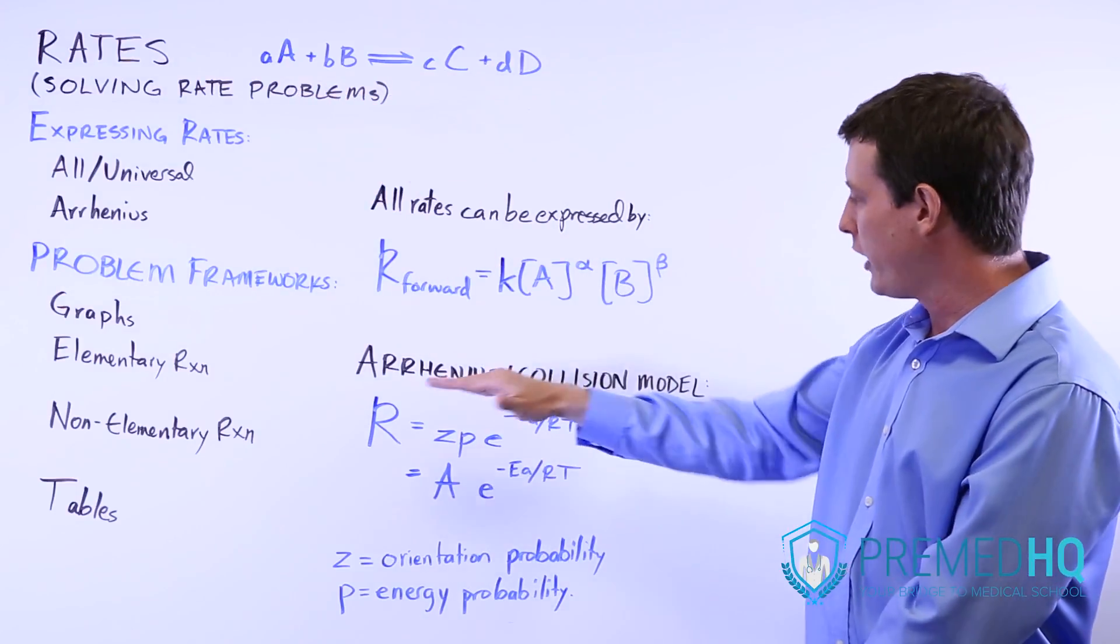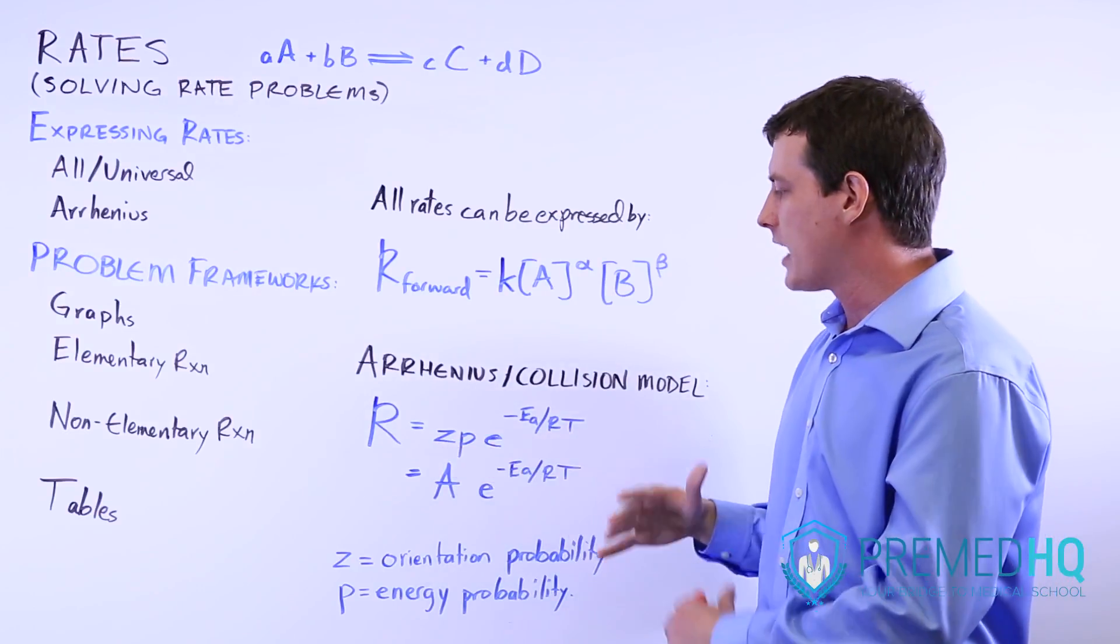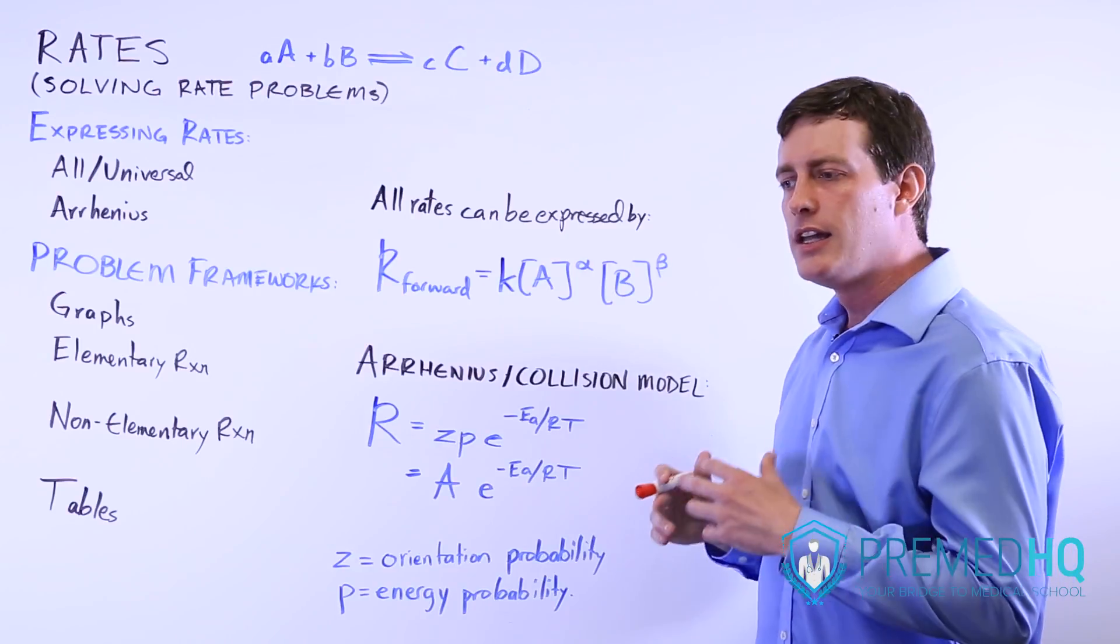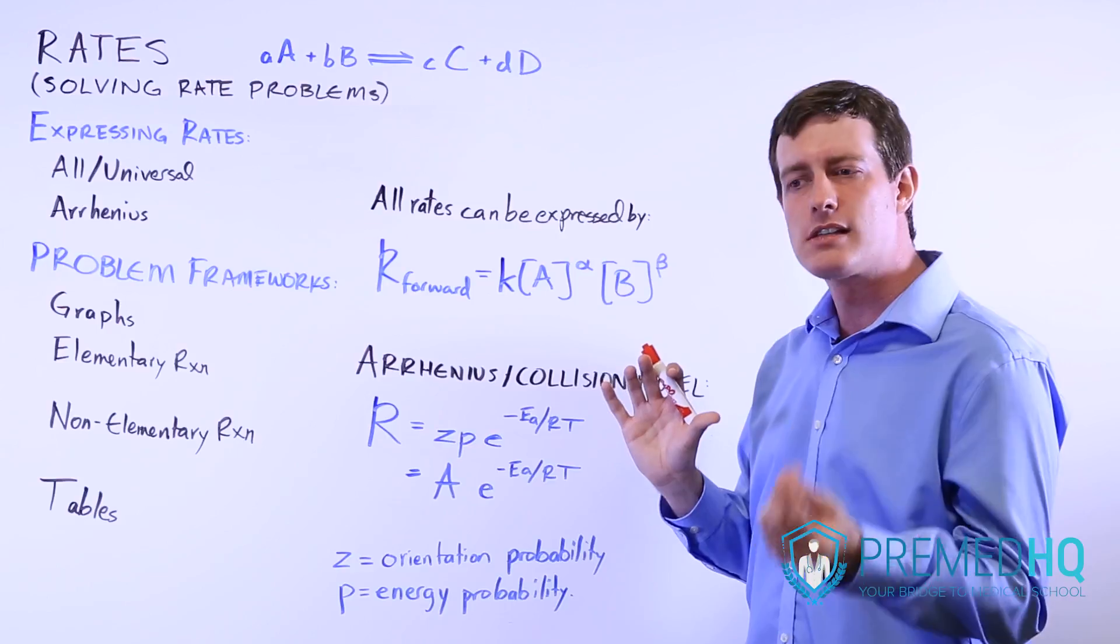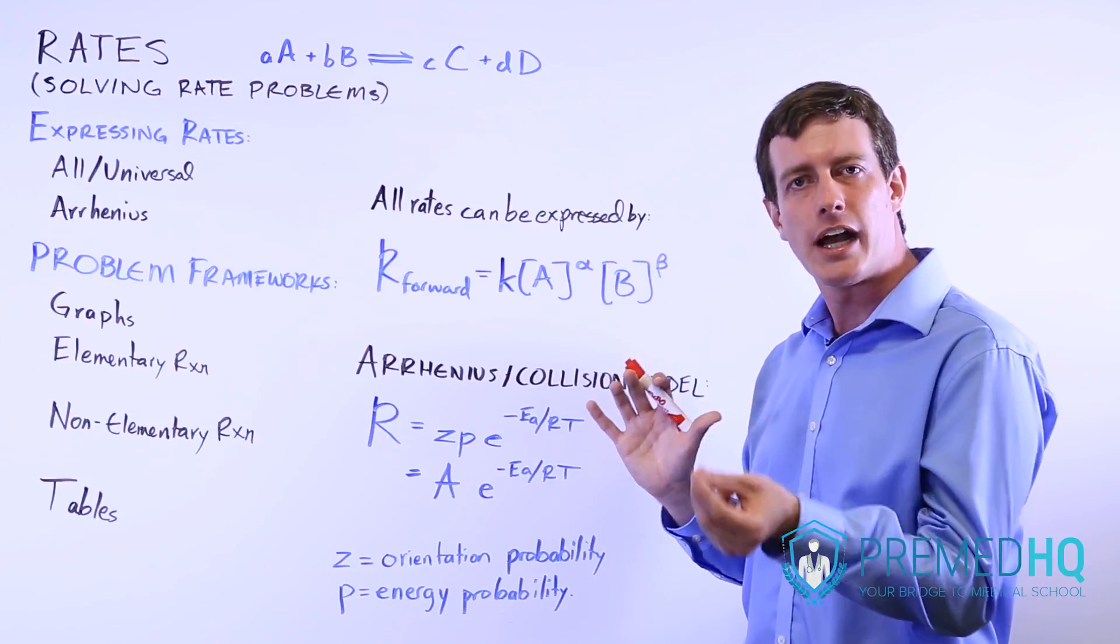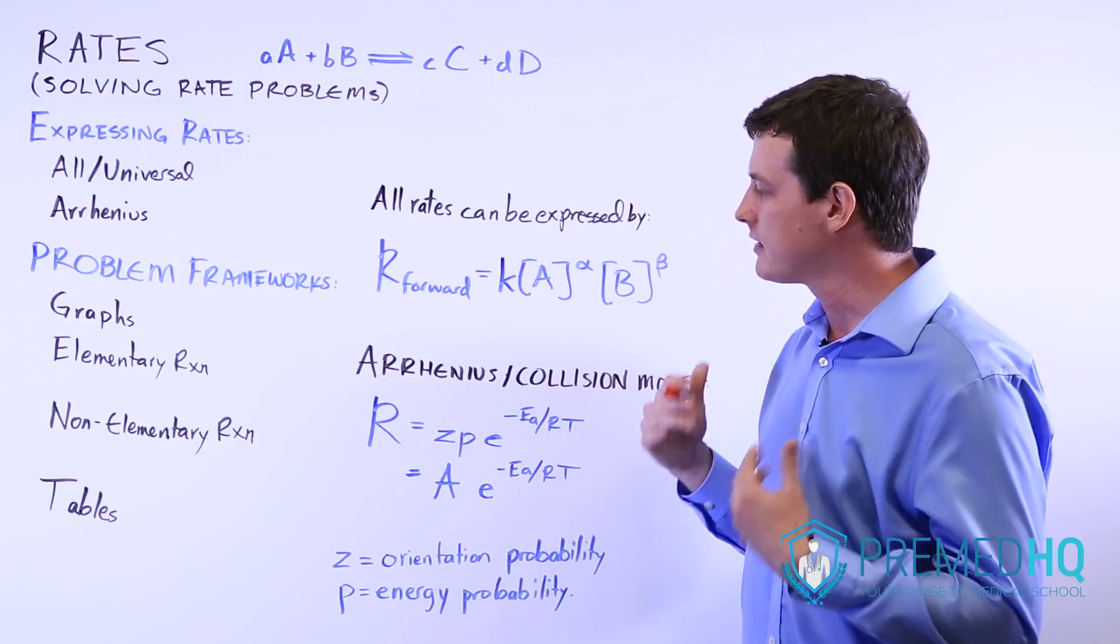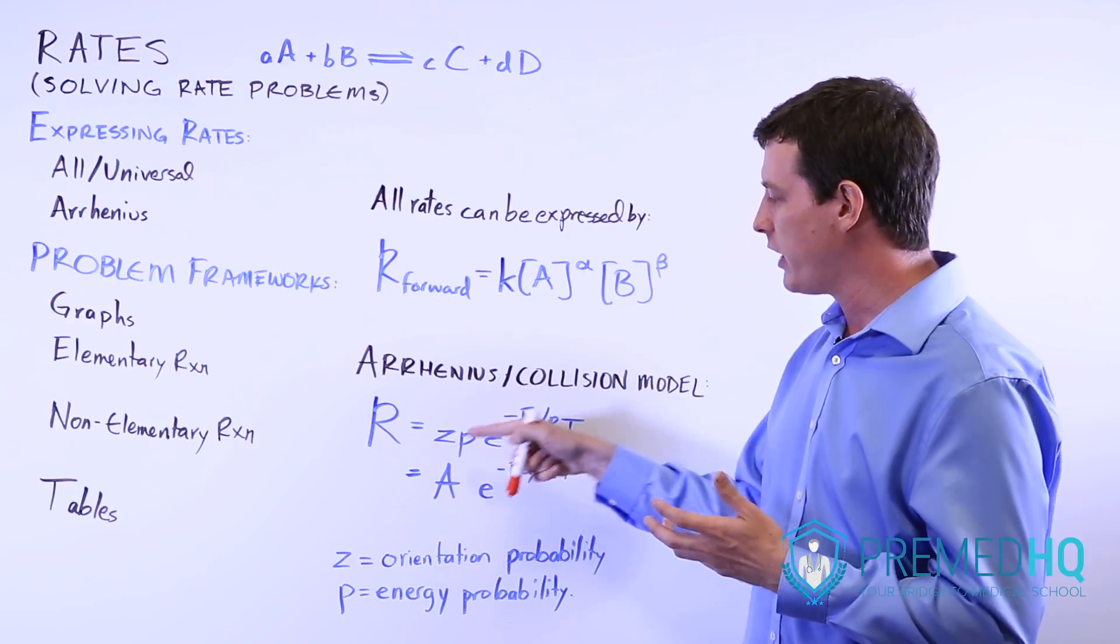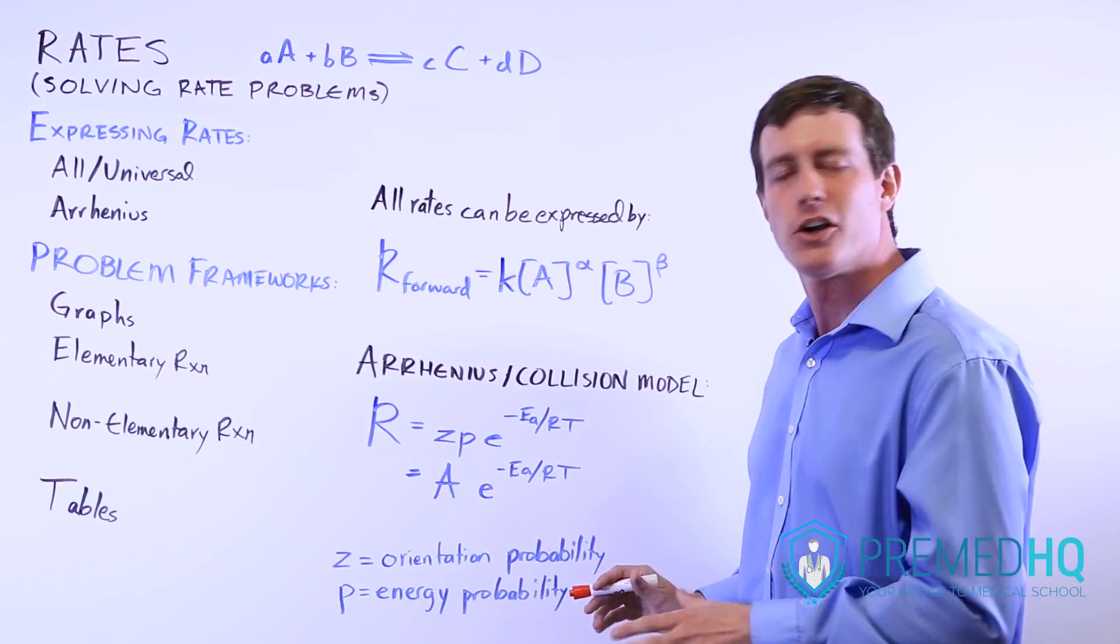Or you can use the Arrhenius collision model, and this could be tested not only mathematically or through a formula, but also verbally. They could say that a catalyst orients one of the substrates such that it's much easier for the reaction to occur. That's one way you could justify a catalyst increasing the reaction rate due to these Arrhenius factors of orientation probability and energy probability.